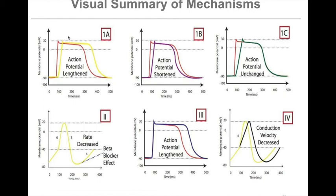Class 2 drugs tend to have their greatest effect on the nodal action potential. Beta blockers, which are class 2 drugs, shown in the dashed line, decrease the rate of phase 4 in the nodal action potential compared to the normal yellow line response. This is what normally initiates the nodal action potential, and slowing it will slow the heart rate overall. Class 3 drugs have their greatest effect on myocardial action potentials — potassium efflux was responsible for decreasing the membrane potential in phases 1, 2, and 3 of the myocardial action potential.